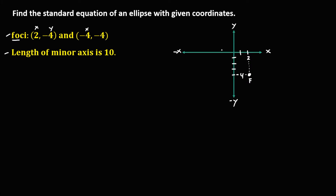The second focus has x equal to negative 4 and y equal to negative 4. We plot and connect that point. Observing the graph, since the foci are in a horizontal position, this ellipse is a horizontal ellipse.